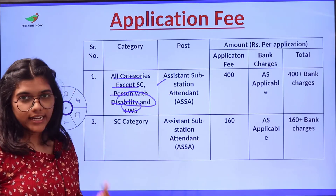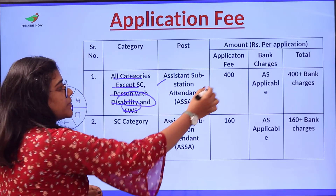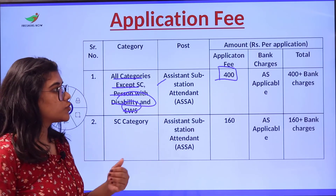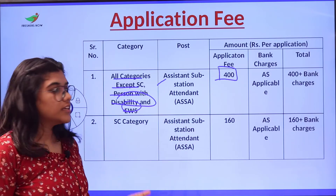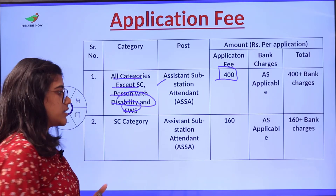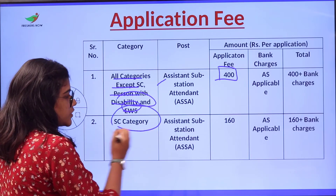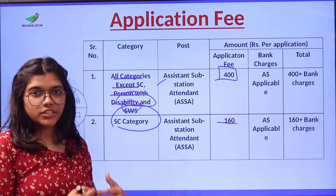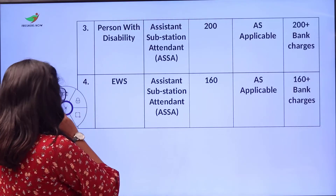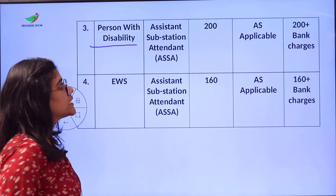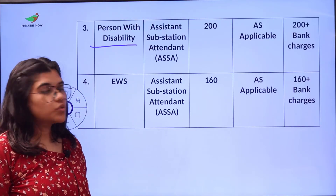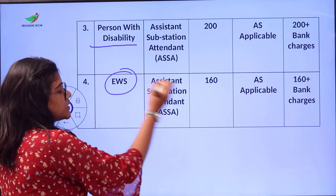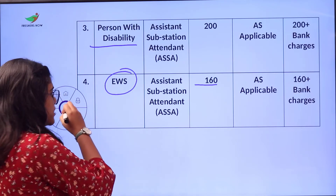For the post of Assistant Substation Attendant, the application fee is ₹400 plus additional bank charges to be paid separately. For the SC category, it is ₹160 along with bank charges. For Person with Disability, the application fee is ₹200 with additional bank charges. For EWS, it is ₹160 plus additional bank charges.